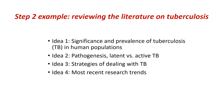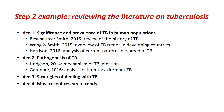For example, if you are reviewing literature on tuberculosis, you could begin with four ideas: first, significance and prevalence of tuberculosis; second, pathogenesis and latent versus active tuberculosis; third, strategies of dealing with tuberculosis; and finally, most recent research trends. You can then expand your outline — for idea one you might have a source reviewing the history of tuberculosis by Smith, an overview of trends in developing countries by Wang and Smith, and an analysis of current patterns of spread of tuberculosis.